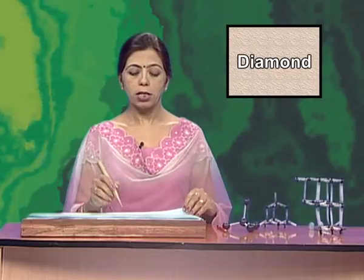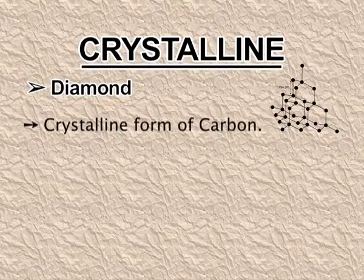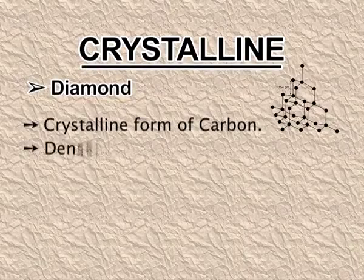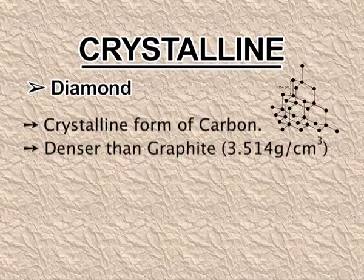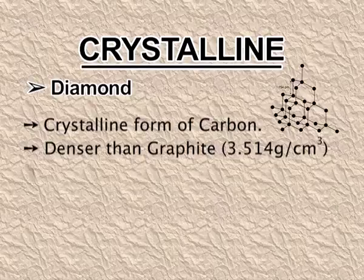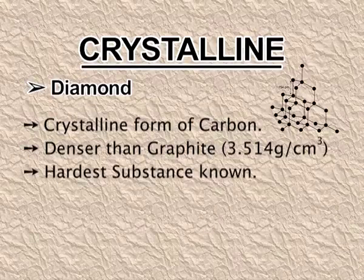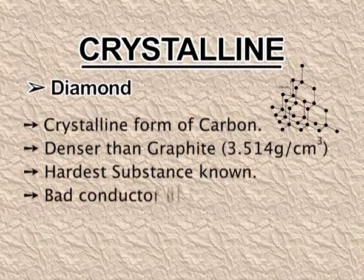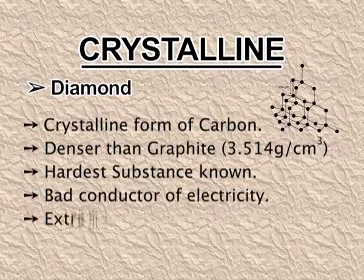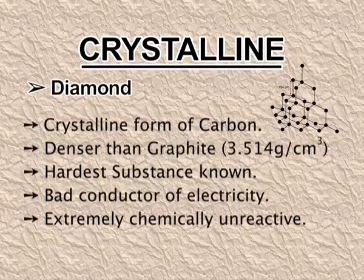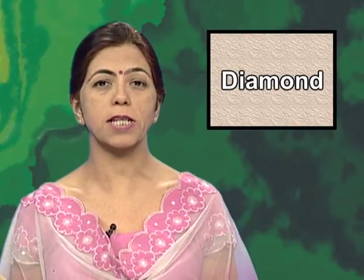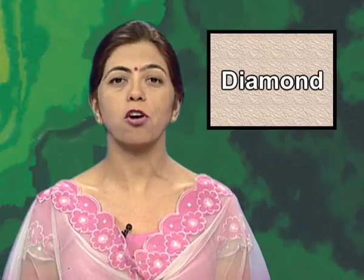Diamond is the crystalline form of carbon. It is denser than graphite — its density is 3.514 grams per centimeter cube. It is the hardest substance known. It is a bad conductor of electricity and extremely chemically unreactive. All these properties are due to the structure of diamond.